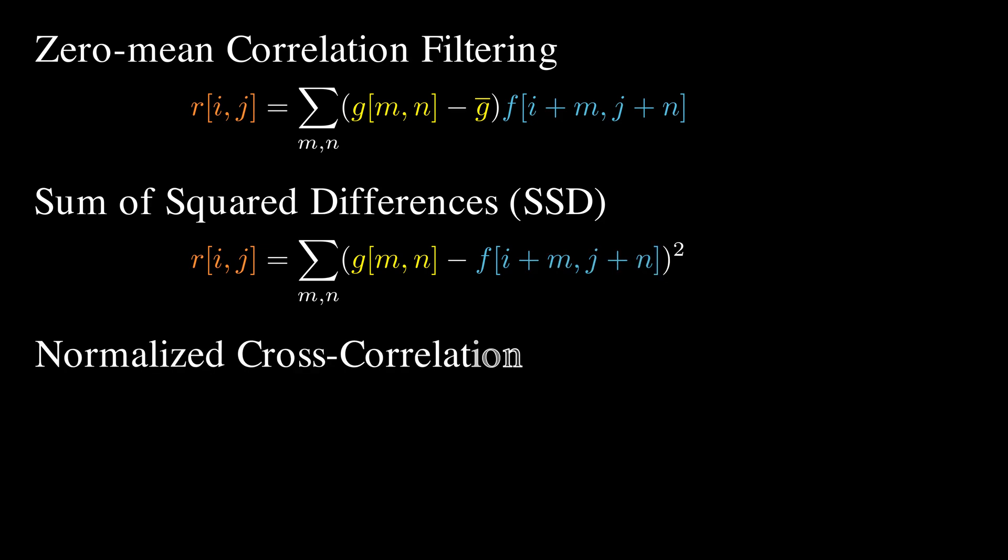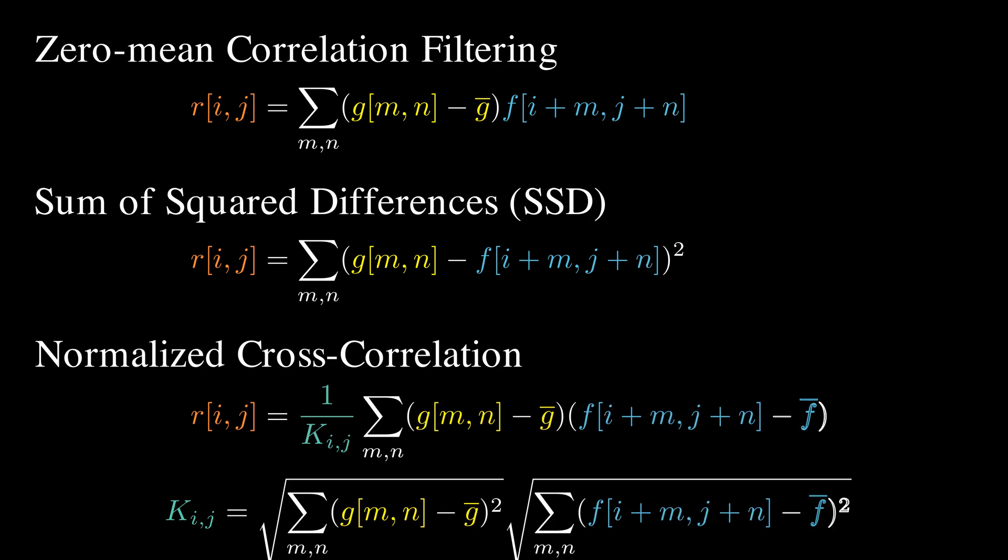The normalized cross-correlation is the slowest, but robust to intensity variations. Each approach has trade-offs, but now we have a solid set of tools to find Waldo.